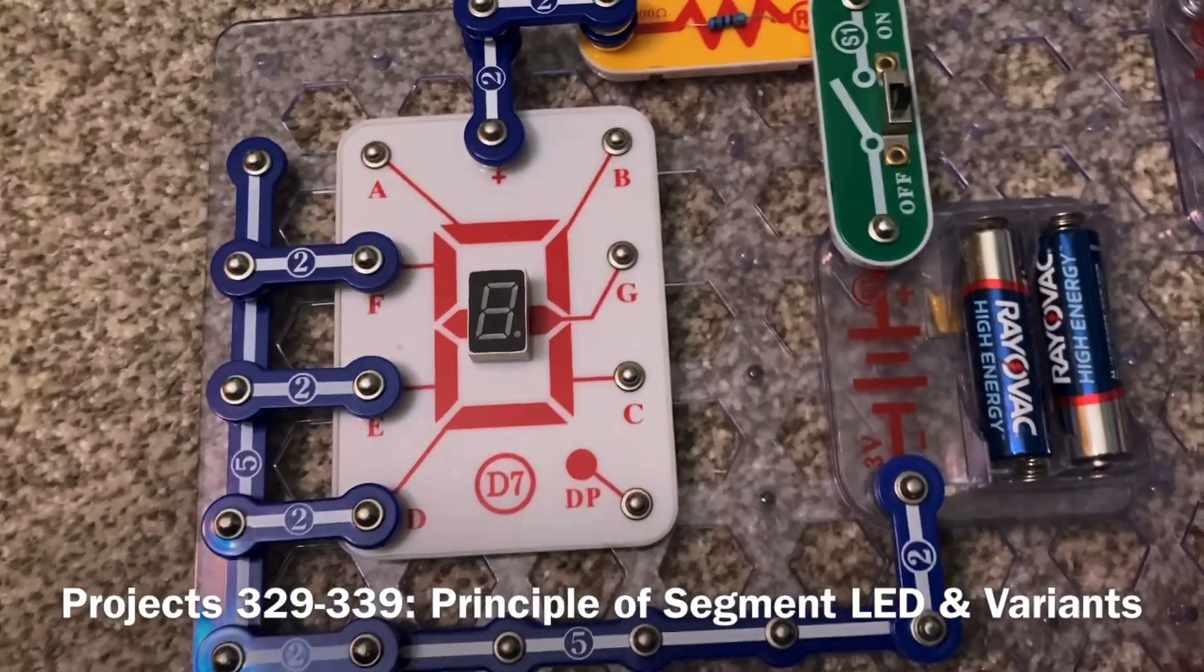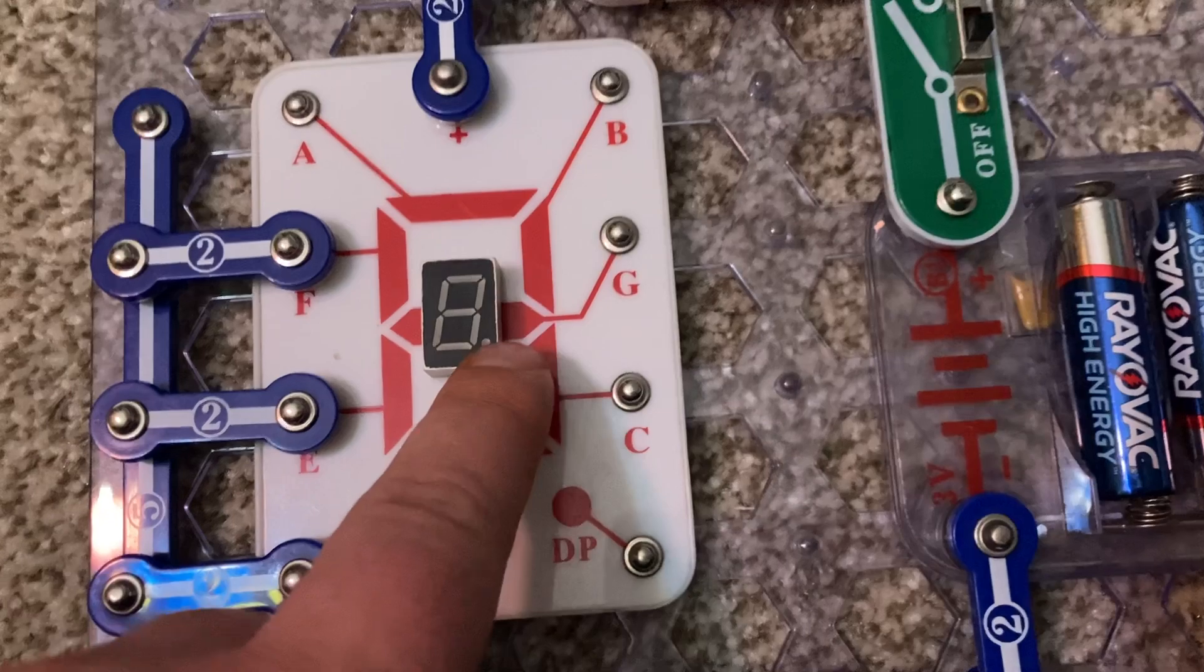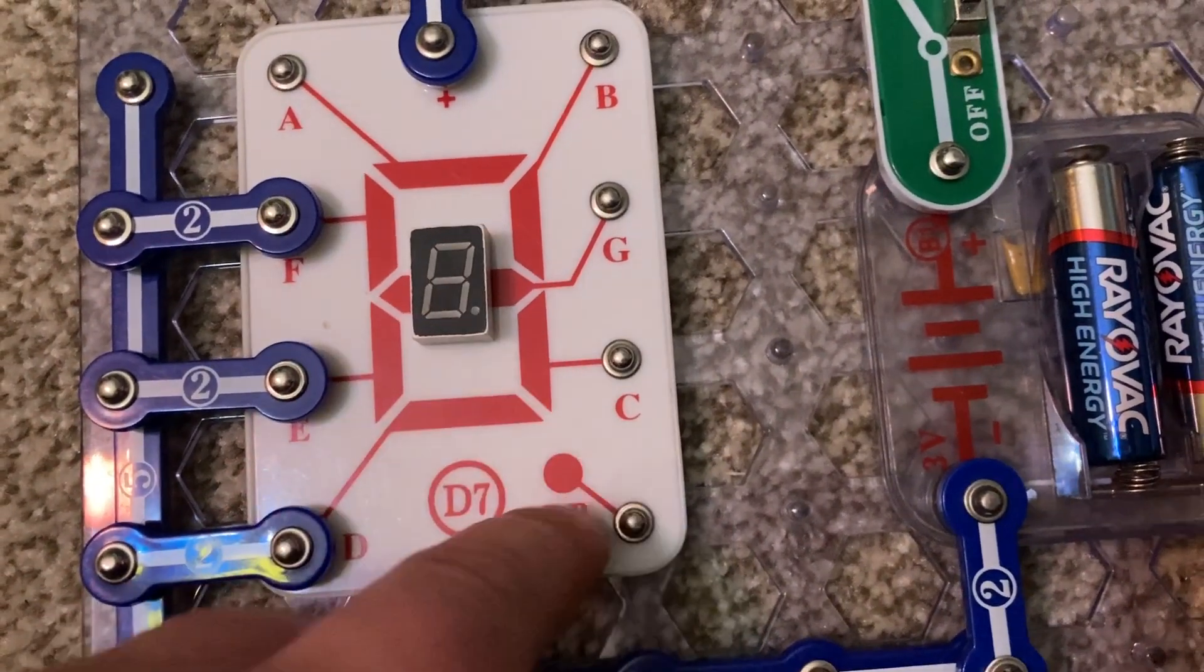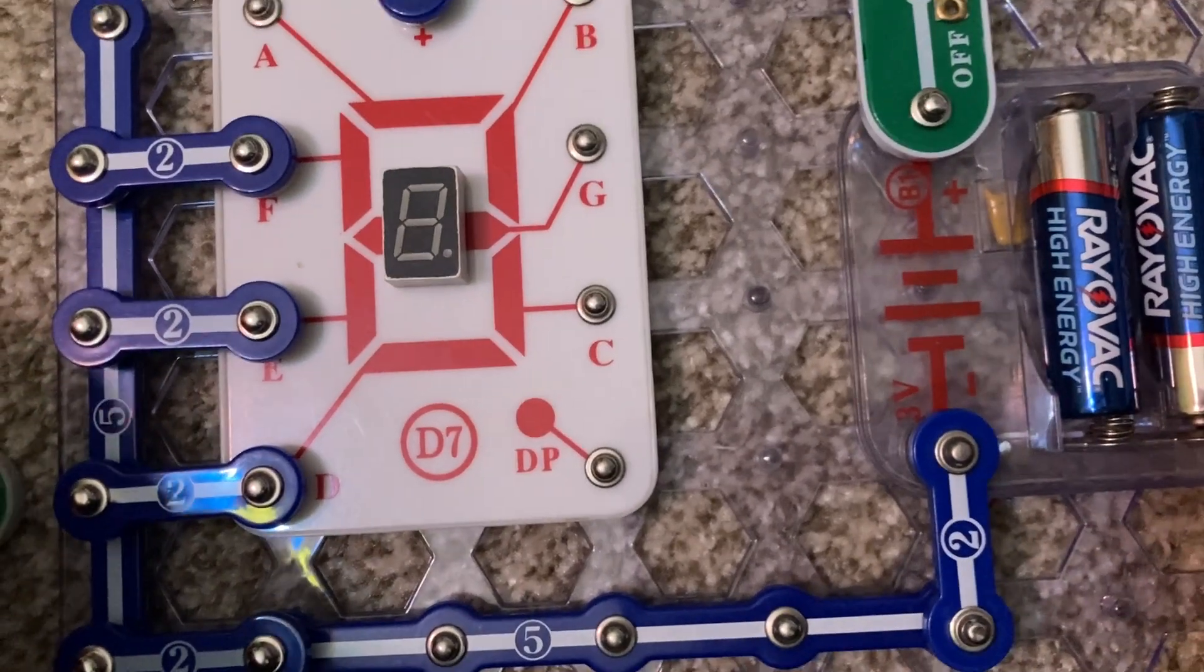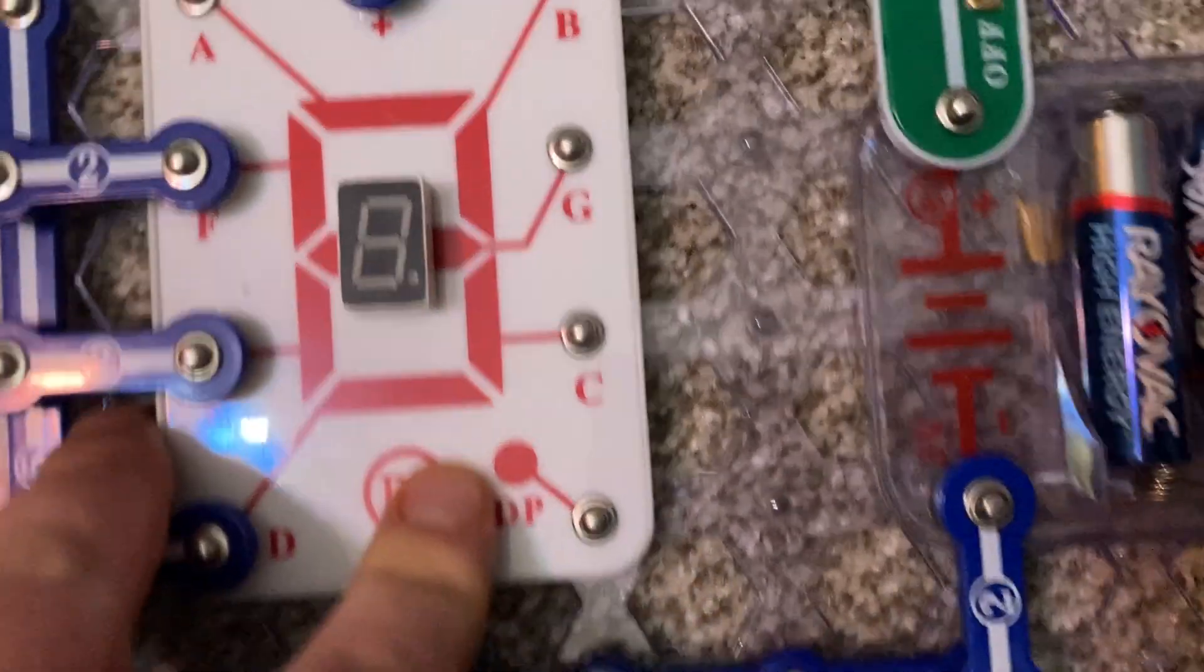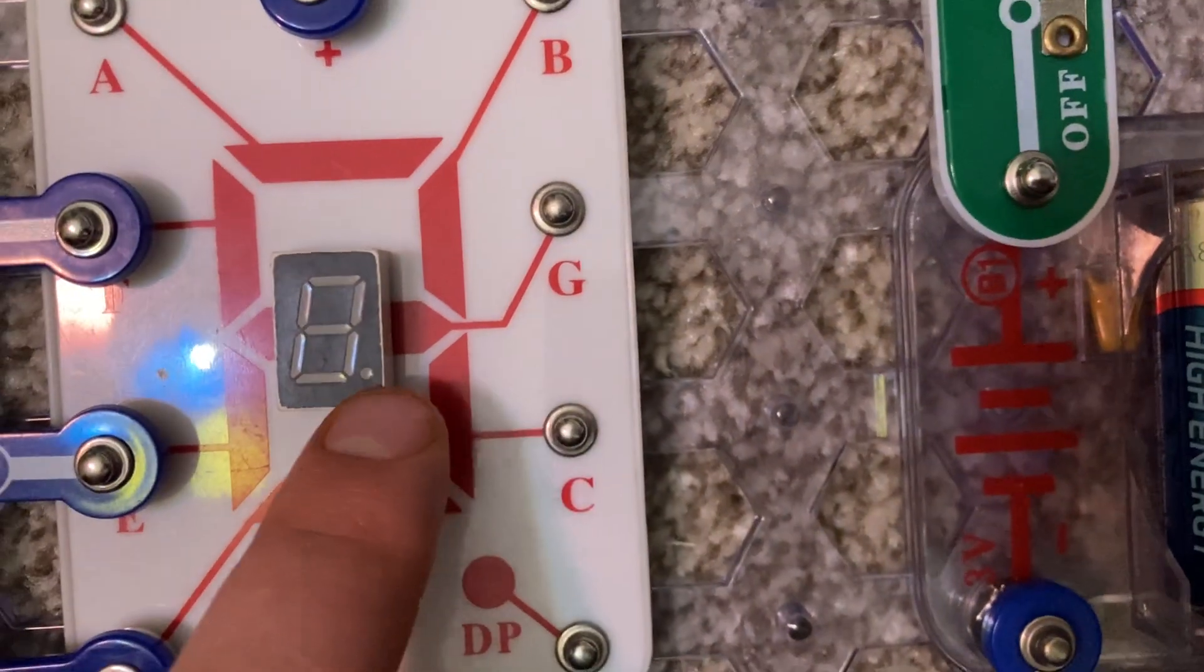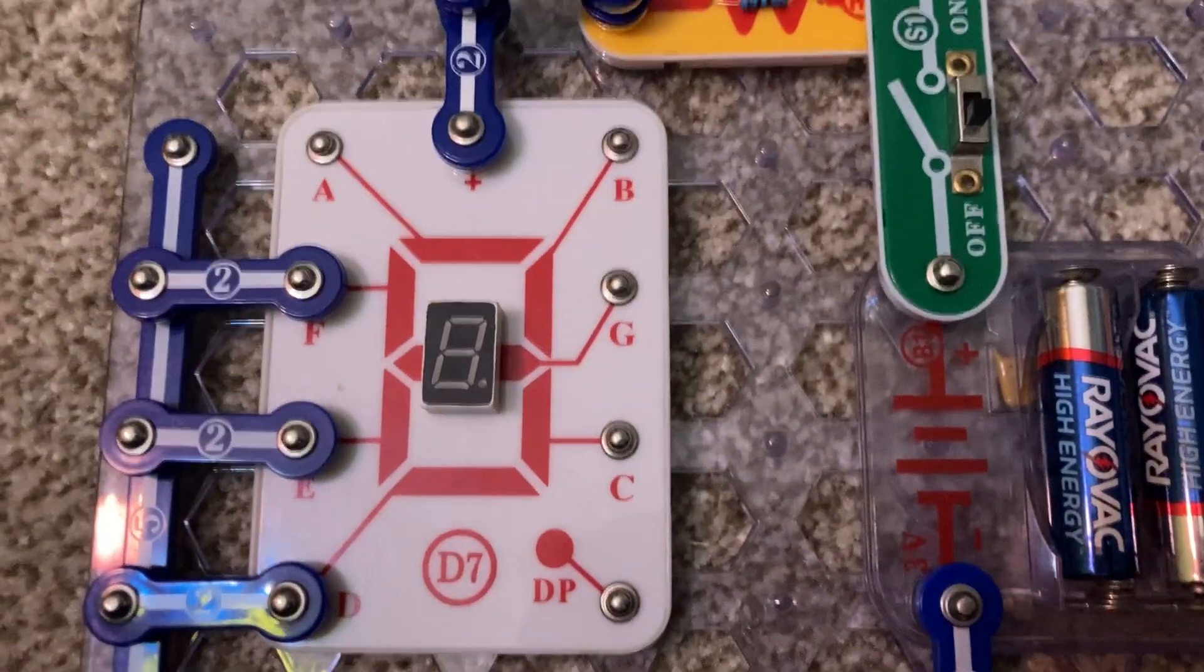The next 11 projects involve the 7-segment display, which is a device that has 7 LEDs that illuminate in various combinations to display different numbers or letters. Although most generally have 7, this particular one actually has 8 LEDs because there is a decimal here that can illuminate too.